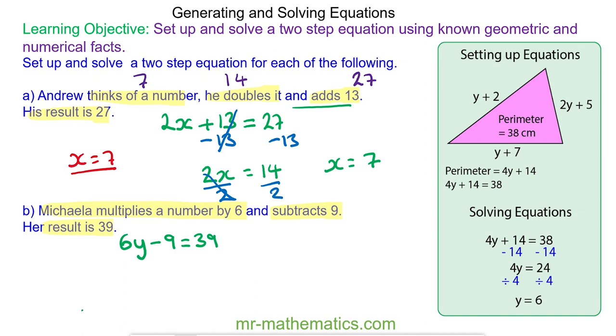We'll solve the equation by adding 9 to both sides because 9 take away 9 will make 0. So 6y will equal 39 plus 9 which is 48. We'll do the opposite of times by 6 which is dividing by 6. So 6 divided by 6 will make 1. So y will equal 48 divided by 6 which is 8.